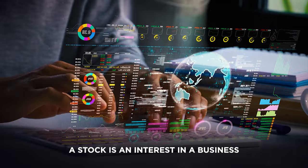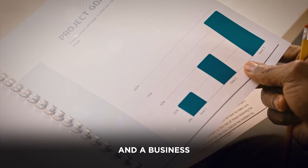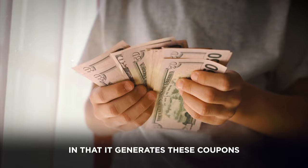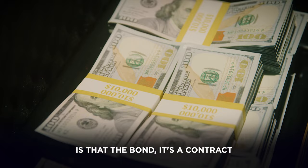A stock is an interest in a business. It's like owning a piece of a company. In a business, a profitable one is like a bond in that it generates these coupons or these earnings or cash flow every year. The difference with a stock and a bond is that the bond, it's a contract. You know what you're going to get as long as they don't go bankrupt and default.